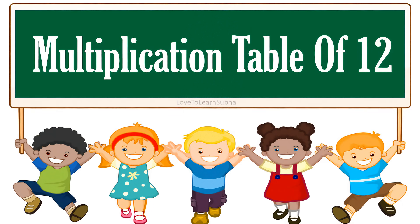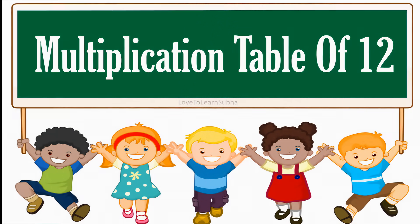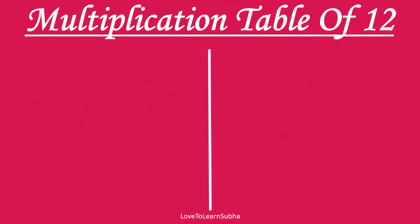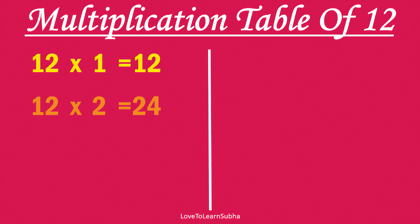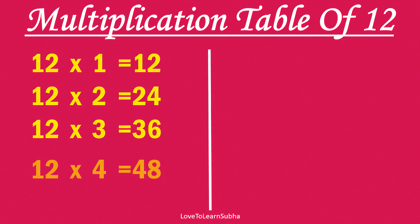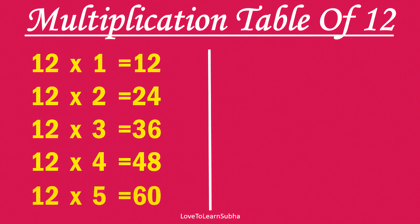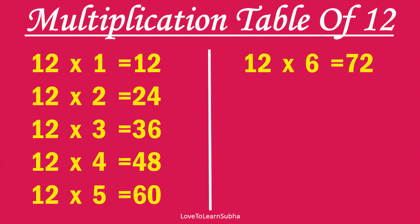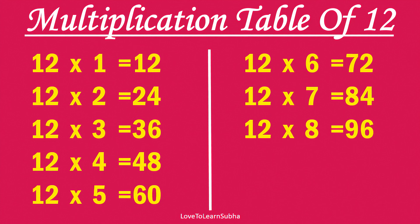Multiplication table of 12. 12×1 is 12, 12×2 is 24, 12×3 is 36, 12×4 is 48, 12×5 is 60, 12×6 is 72, 12×7 is 84, 12×8 is 96.